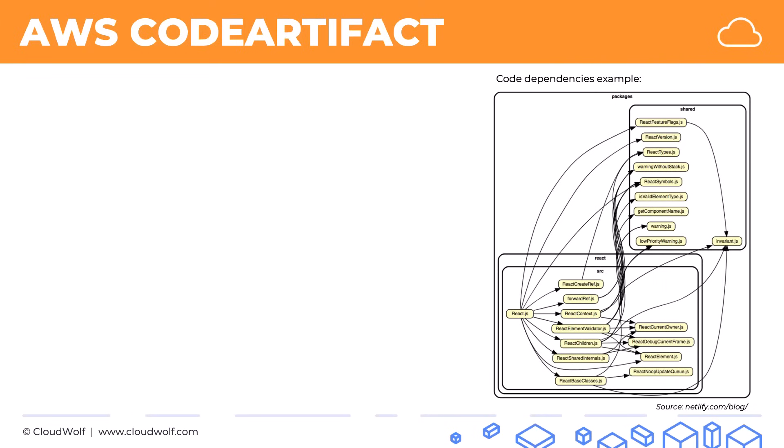Here's an example of code dependencies. When developers write code and create complex systems, often it's not just all in one file. There are lots of different files and lots of different elements to a program — libraries, packages, and other sorts of dependencies where their code depends on these things.